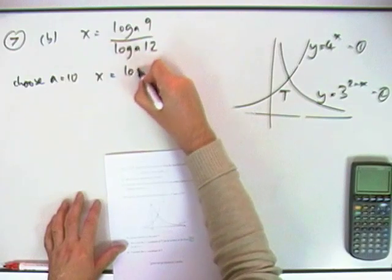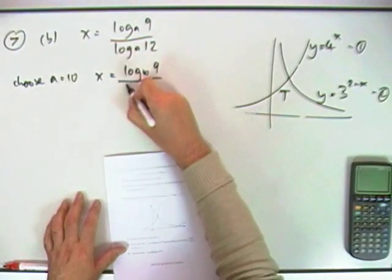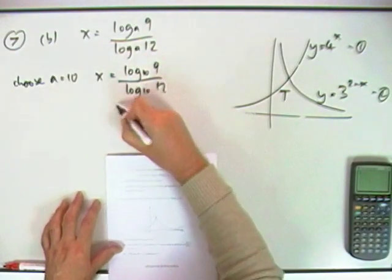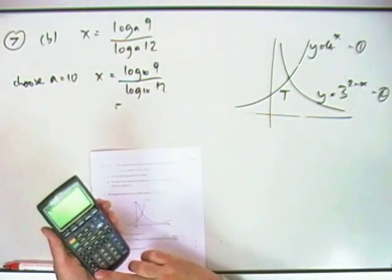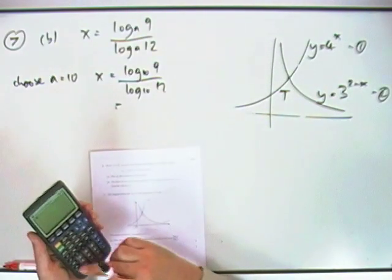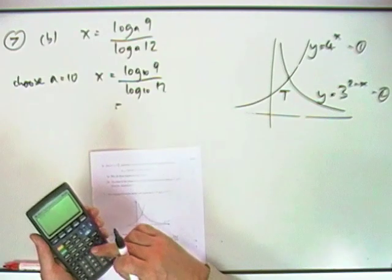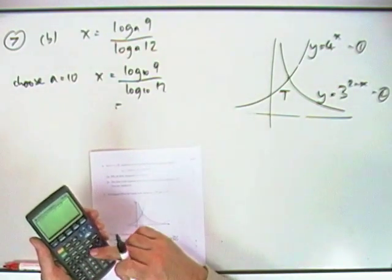Which means x is going to be log 10 of 9 divided by log 10 of 12, and it's just a case of putting that into your calculator. So I've got, where's my buttons, log 9 divided by log 12.